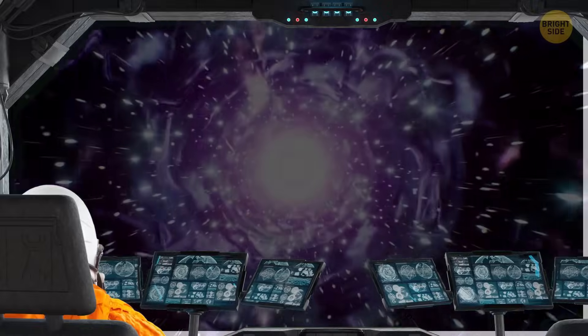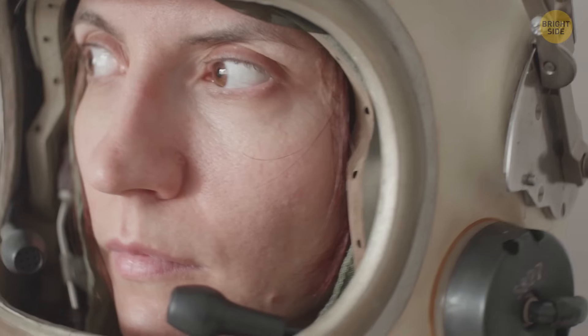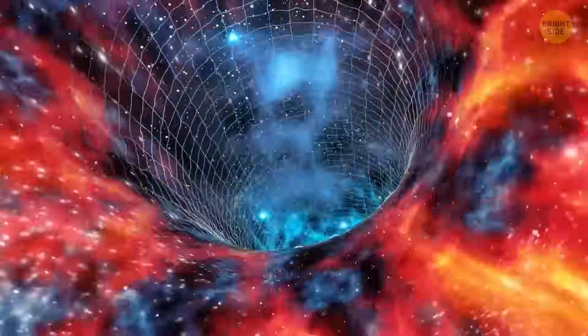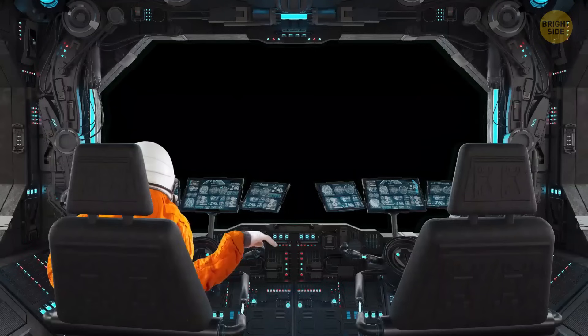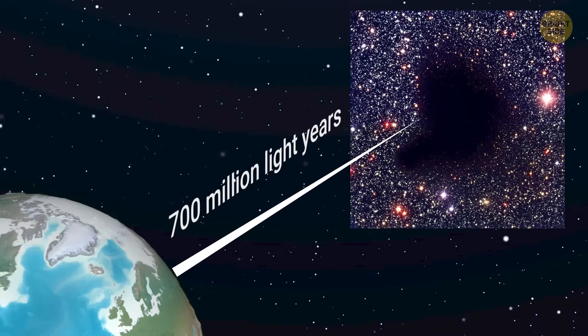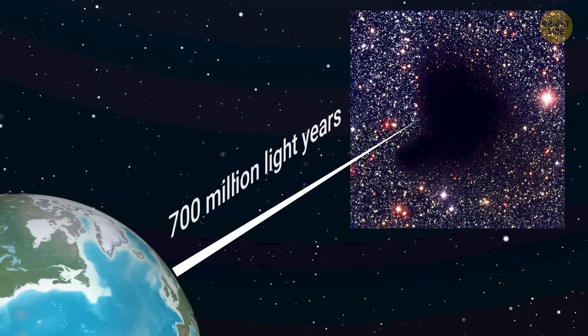And then, suddenly, you see nothing. At first, you're horrified. Something has gone wrong, and you've accidentally entered a black hole? Has your equipment malfunctioned? Because it seems that at a distance of 700 million light-years away from Earth, there's a hole.